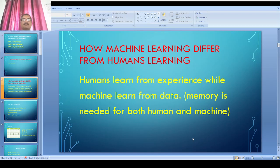Machines learn from data. That is the key difference between human learning and machine learning. Humans learn from experience while machines learn from data. But the common part between both is that both need memory.